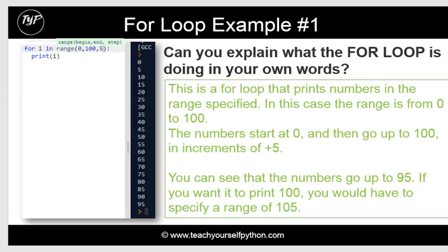Let's have a look at some examples. This on the left is an example of a for loop, and as you can see over here, this is the output of the for loop. You can see it says for i in range, and then it says 0 to 105, and then it says print i. From the output you might be able to guess what this for loop is doing. So let's analyze it.